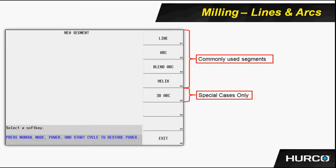Helix is something we can use very similar to thread milling. You're not only going to give it a radius and it's going to continually go in a circular motion, but it's going to drop down a value in Z every revolution. Then we have 3D arc, used for special cases — these 3D arcs are in the XZ or YZ plane. The line through helix are the four most commonly used in any programs we're going to write.